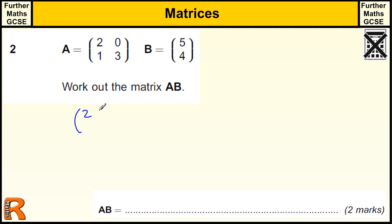So I've got the matrix A, which is 2, 0, 1, 3, and the matrix B, 5, 4. And to work out AB,